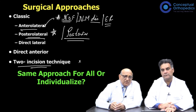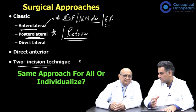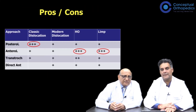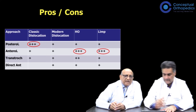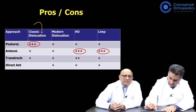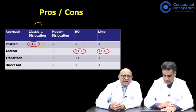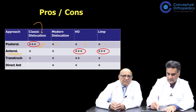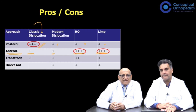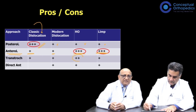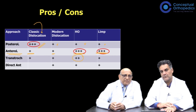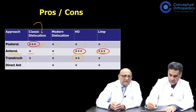Do you use the same approach for all or do you individualize? Here are the pros and cons of each approach. The posterolateral approach has a higher incidence of dislocation, though with modern technique that incidence is less, very little heterotopic bone formation, and very little limp. With the anterolateral approach, you have less risk of dislocation but higher incidence of heterotopic bone formation, and the limp persists for some time — though at one year both approaches may be equivalent in terms of quality of ambulation. The transtrochanteric approach has a slightly higher incidence of heterotopic ossification, plus problems of wire breakage or non-union of the greater trochanter.